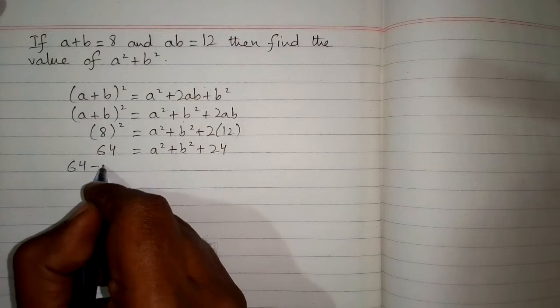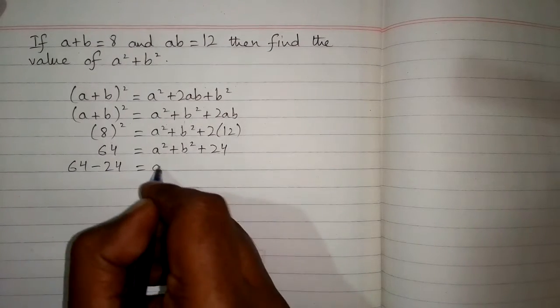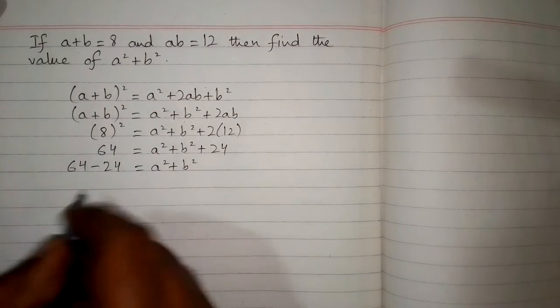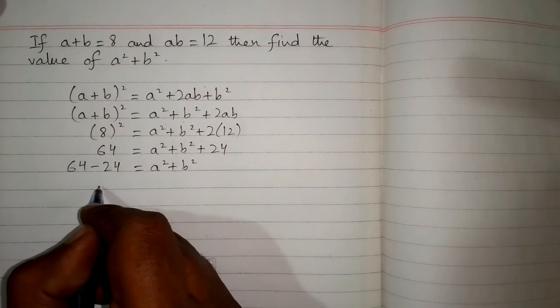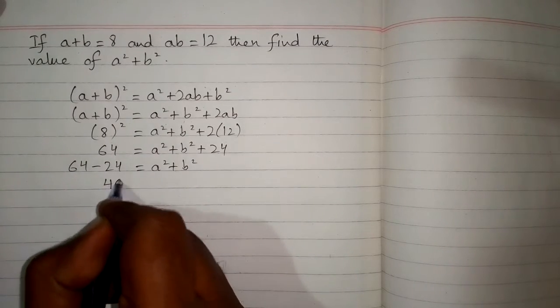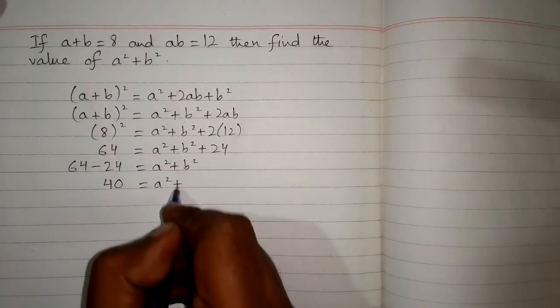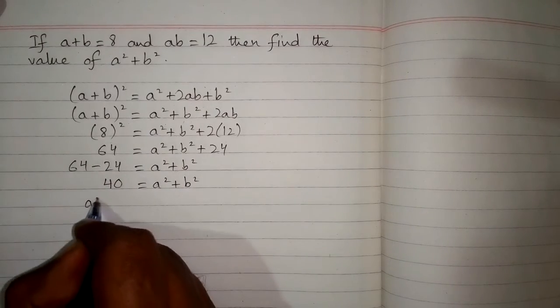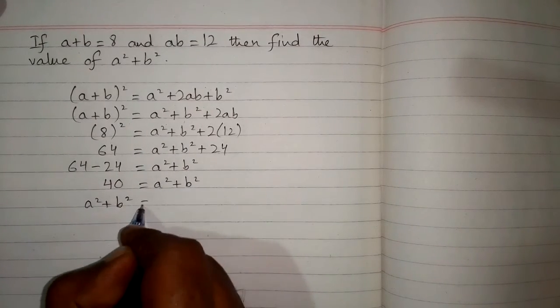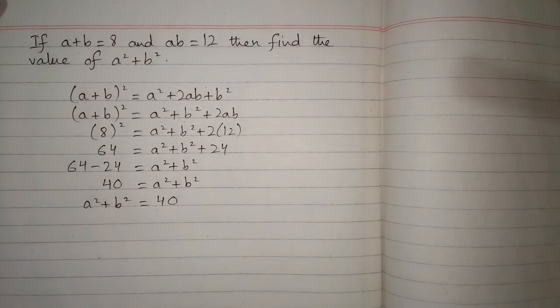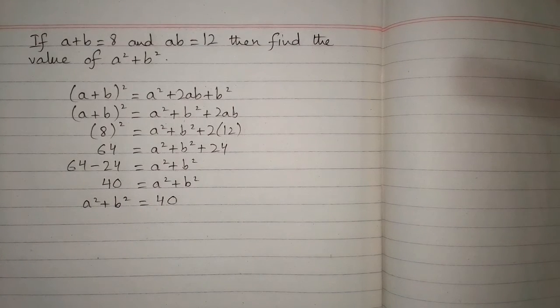So +24 becomes -24. Now 64-24 equals 40, so the value of a²+b² is equal to 40. This is the required answer.